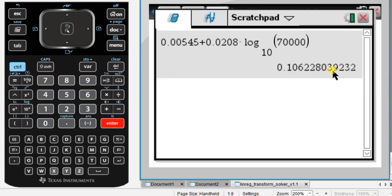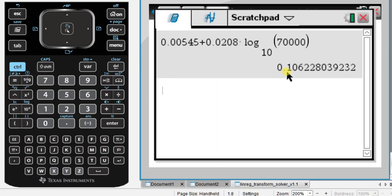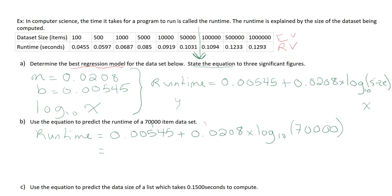So control enter gives me this lovely value here, which is my run time. Always do a quick check for reasonability. So it's saying around 0.1 of a second for 70,000. Look at your data set and make sure that actually makes sense. So for our data set, 70,000 would be somewhere in here. Okay, and 0.1 seconds is somewhere in there. So that is a reasonable answer. Okay, so always do triple check that. It hasn't told me how to round, so I'll do three significant figures again. So 1, 0, 6. So 0.106 seconds.